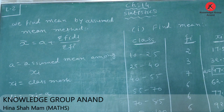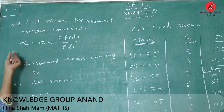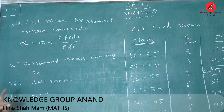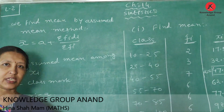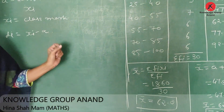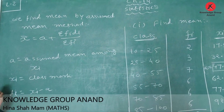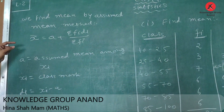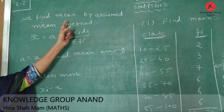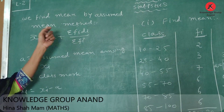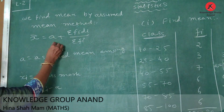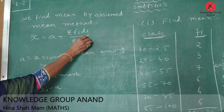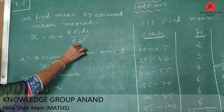In the previous lecture, we learned mean by the direct method, where x̄ is equal to sigma fi·xi upon sigma fi. In this method, we learn mean by the assumed mean method. For this, we use the formula x̄ is equal to A plus sigma fi·di upon sigma fi.